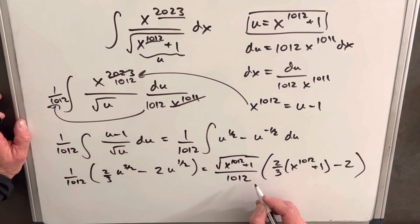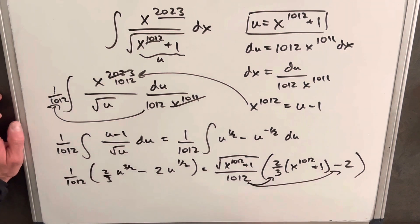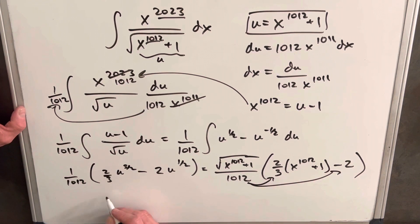Then next, actually I think what I'm going to do, we just need to simplify. I'm actually going to multiply this back in here and back in here. And when we do that, what we're going to be left with is we're going to have our square root of x^1012 plus one.